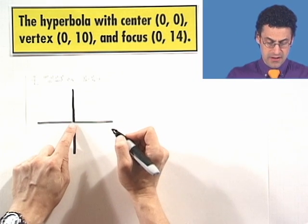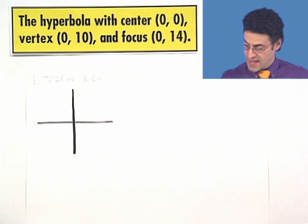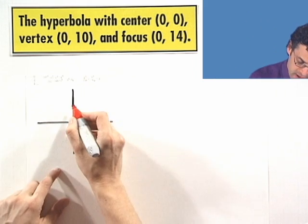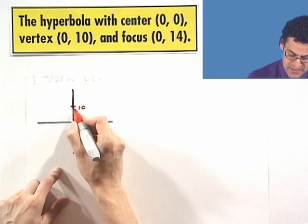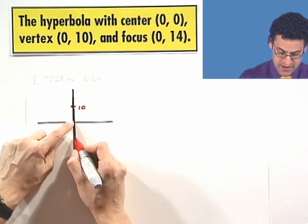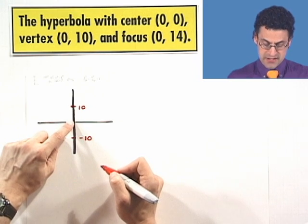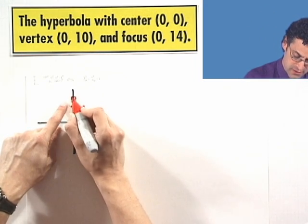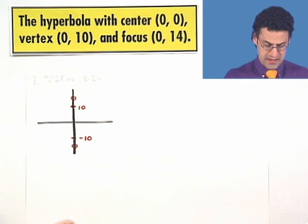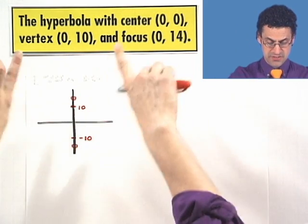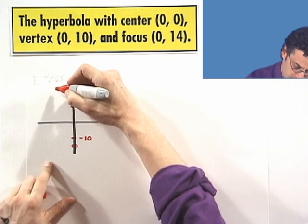Center is going to be here. One vertex is at 0, 10. Ah, 0, 10. That's on the y-axis. Do you see that? Way up here. Let's put 10 here. Which means I'm going to have one, since it's centered at the origin, I'm going to have one at negative 10. And the focus is at 0, 14, which is up here a little bit. So here's the focus, which means the other focus will be down here. And so this sort of gives me a sense of what the picture's going to look like. It's going to sort of go up and down. So this hyperbola has its ups and downs.